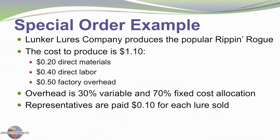By illustration, Lunker Lures produces the Rip and Rogue lure. Their absorption costing structure shows $1.10 to produce each unit: 20 cents materials, 40 cents labor, and 50 cents for factory overhead. Of that factory overhead, 30 percent is variable and 70 percent is fixed. In addition, Lunker Lures pays a dime commission for each unit sold.